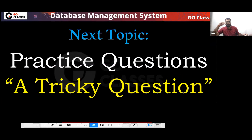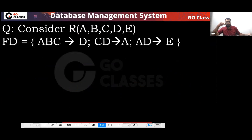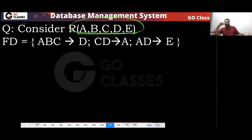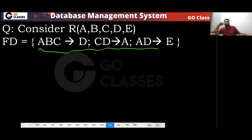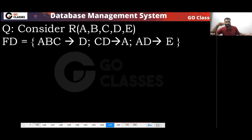One tricky question I want to take. It is a tricky question. So this is your relation. Now in this relation, you tell me, is this in 2NF? Find the normal form — basically find the normal form, find if it's in 2NF or not. Five attributes are given to you: A, B, C, D, E. This is the relation R, and this is the set of functional dependencies: ABC determines D, CD determines A, AD determines E. Now you have to check if this relation is in second normal form.